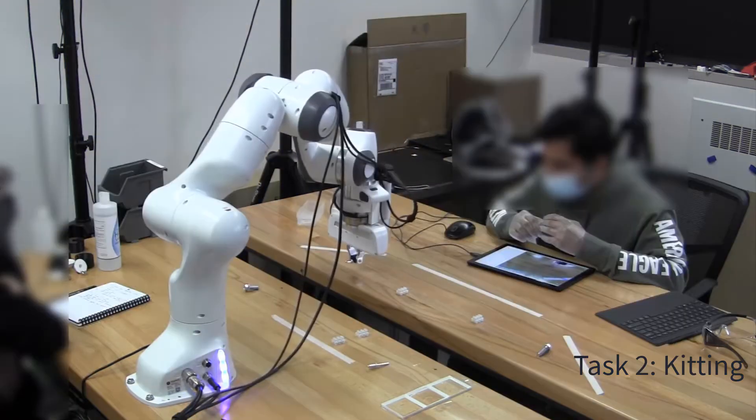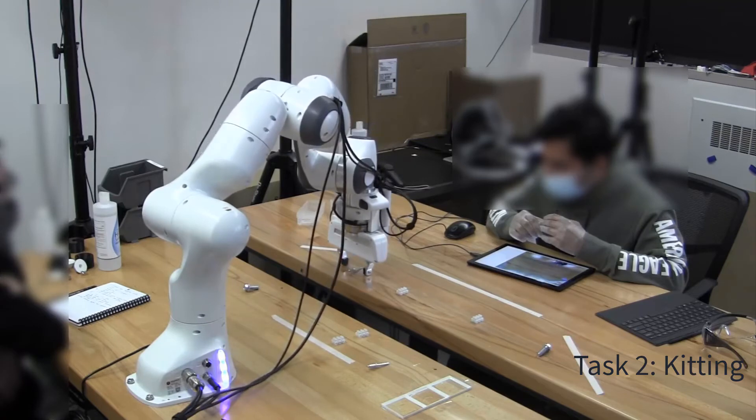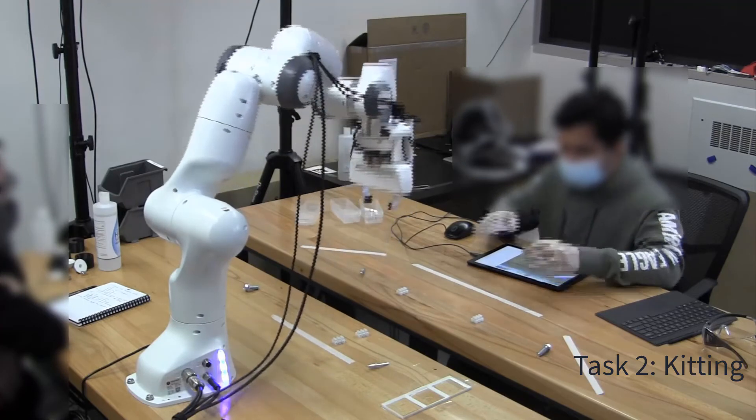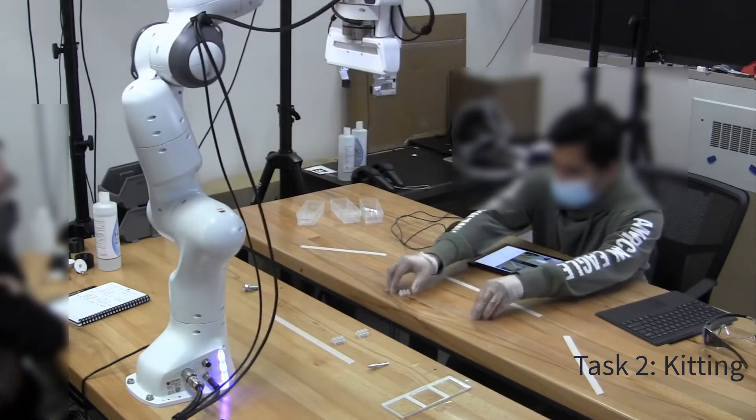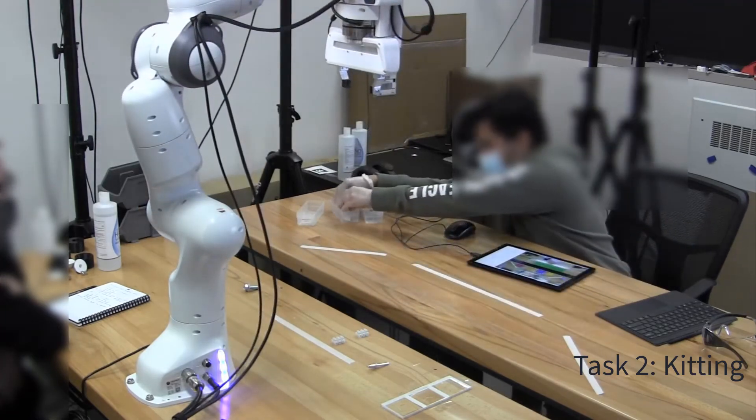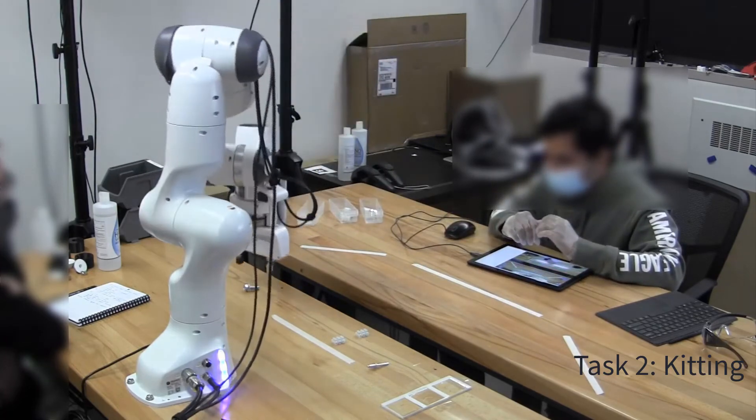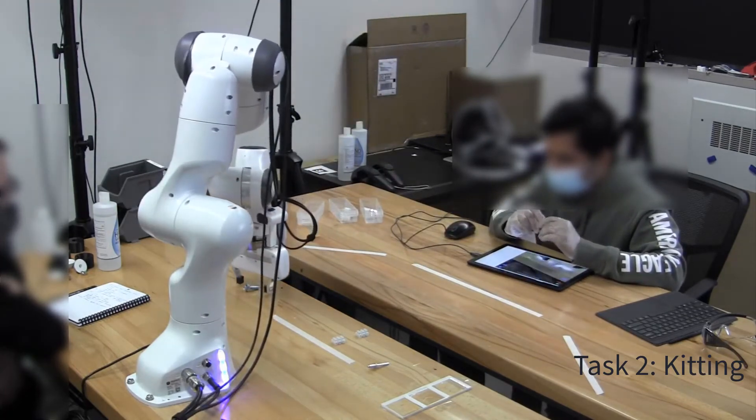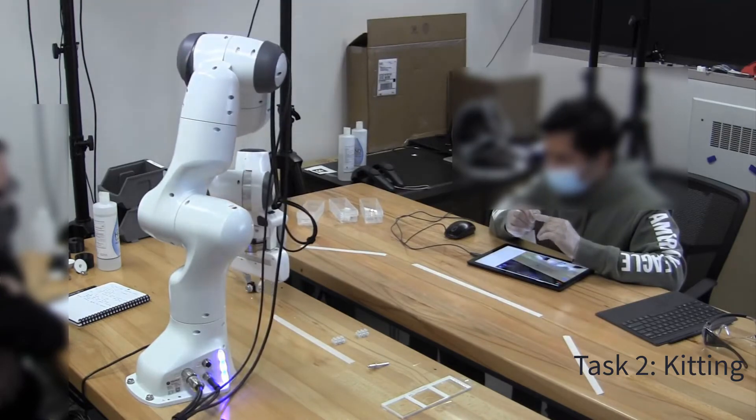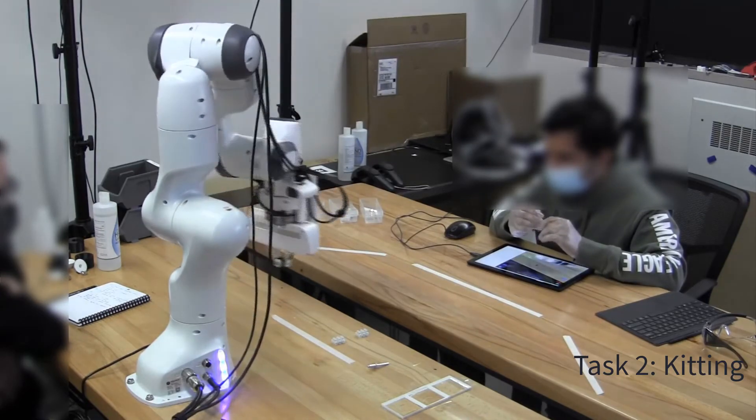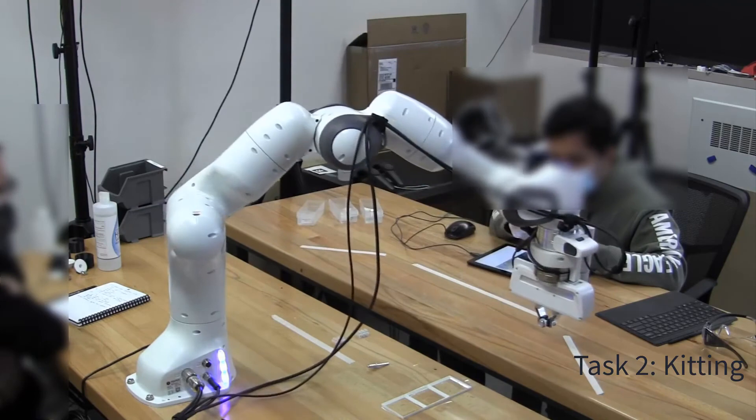In the kitting task, participants programmed the robot to fetch three pieces of hardware needed for each kit. The human was then responsible for putting the final kit together. The kits contained one bolt, two connectors, and one fastener, and participants had to construct three kits. One way to program this task was to create a button which had attached actions to grab each object in the kit and place them in the human workspace.